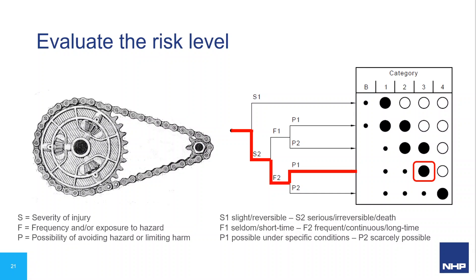We cannot use Category 1 or 2 in this scenario. But maybe we should take another look at the risk assessment. Perhaps we could reduce the frequency of exposure to the chain and sprocket. If we change the lubrication method — using an oil pump to automate it, or a better quality lubricant requiring less frequent application — we can reduce exposure enough to call it F1. This changes our path and we now end up with a safety system designed to Category 1 or 2.